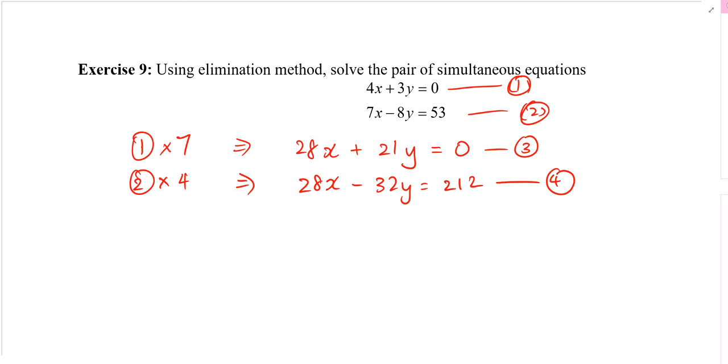What do you want to do? Minus. Which one minus which one? Three minus four? Four minus three? Which one do you prefer? Four minus three. Why you choose four minus three? Because you are thinking ahead. I see a 212 and a zero. I think 212 minus zero results in 212, rather than zero minus 212, then I'll get negative 212. But if you choose to do that, I will be using negative 32y minus 21y. I'll still get a negative answer. So it doesn't really matter.